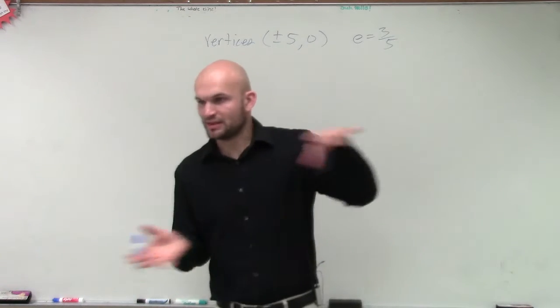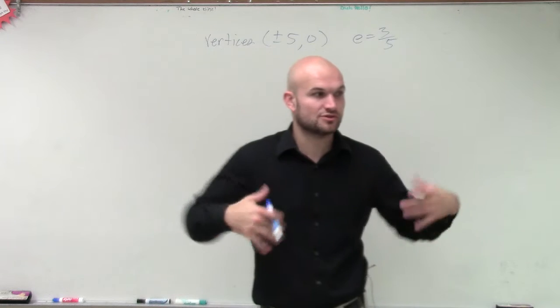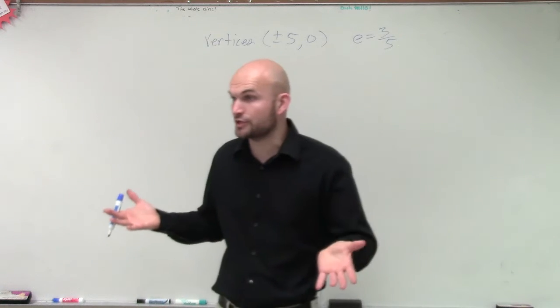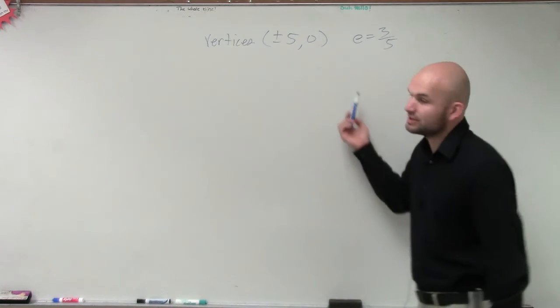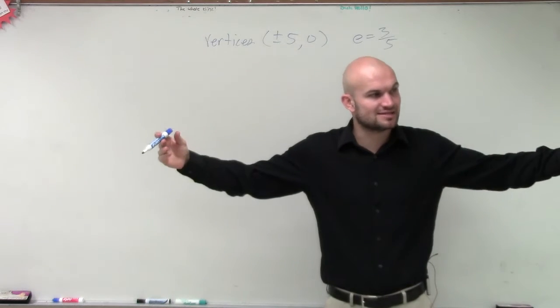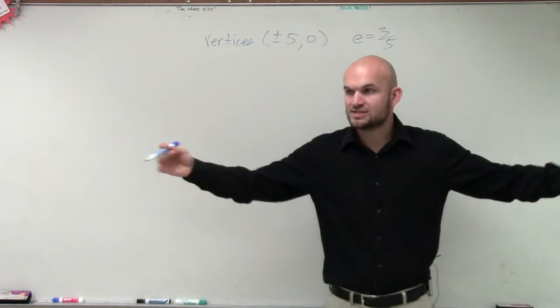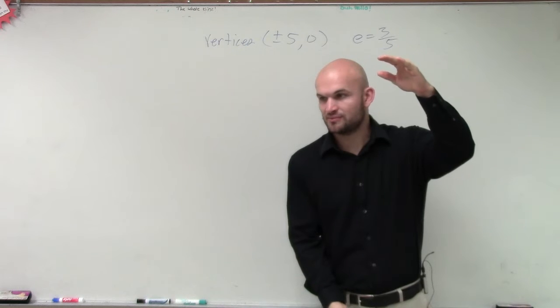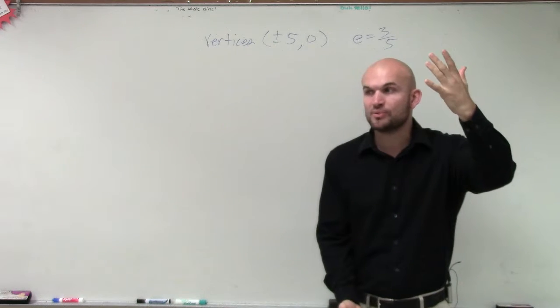Because parabolas, we have parabolas that open left or right, we have parabolas that open up or down, so it was important for you to choose which equation you're going to write it on. The same thing with this, we have ellipses that have a major axis of symmetry horizontally, and we have a major axis that's going to be vertical as well, so we need to make sure we're picking the right equation.